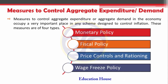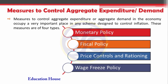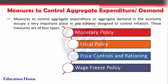Normally you have to know that when demand is increasing and expenditure is increasing, then inflation is increasing. In order to control inflation, the following measures can be used: monetary policy, fiscal policy, price controls and rationing, and wage freeze policy. Those are the main aggregated measures which are helpful to reduce inflation.